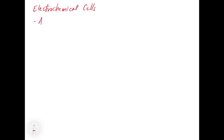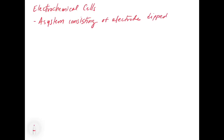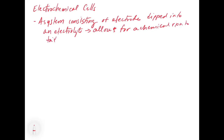An electrochemical cell is a system consisting of electrodes dipped into an electrolyte, and this setup is going to allow for a chemical reaction to take place. These involve an electron transfer. When we're talking about electrochemical cells, we're talking about reactions that are redox in nature — they involve an electron transfer from the anode to the cathode. These can either generate or consume electrical energy.